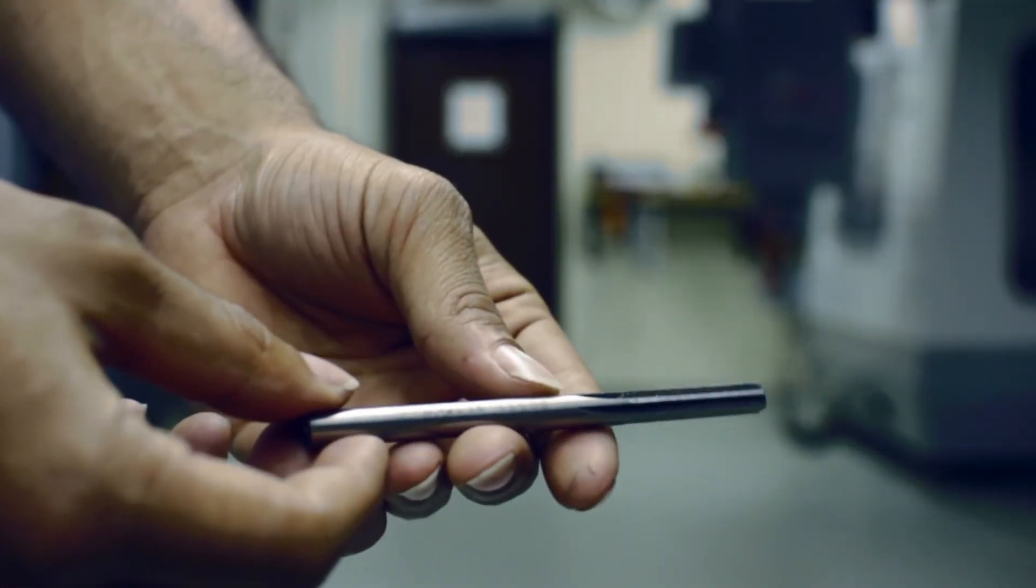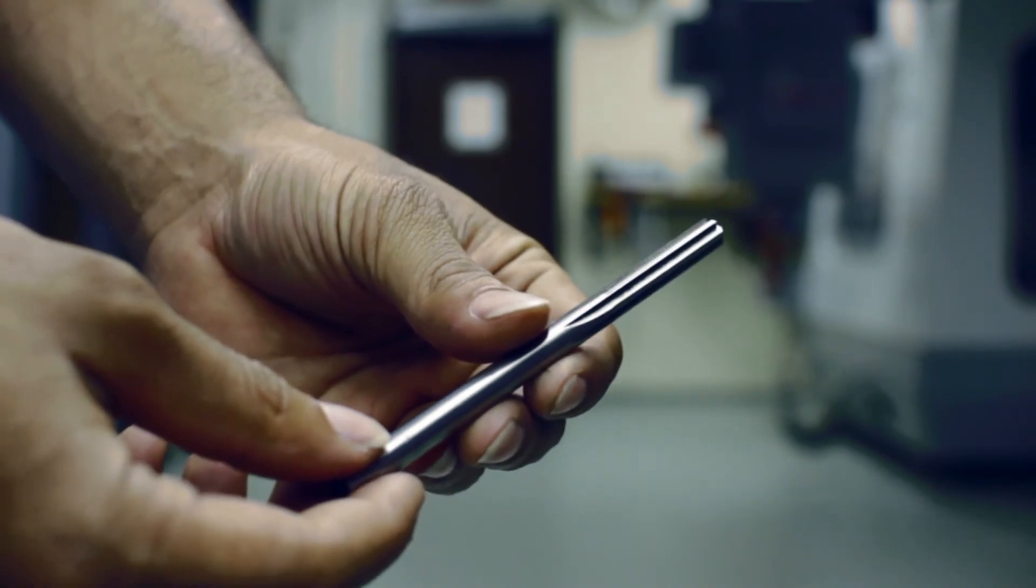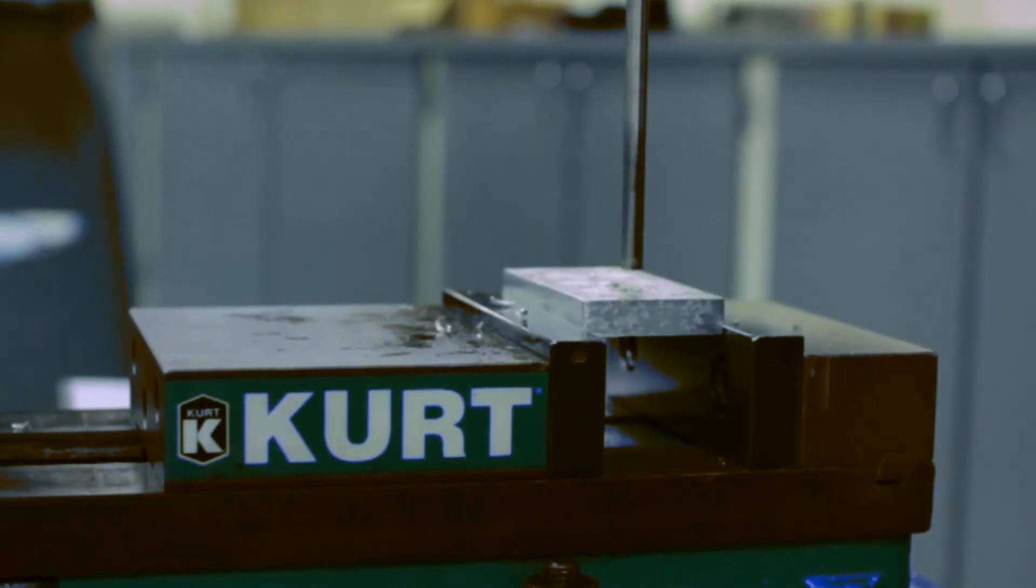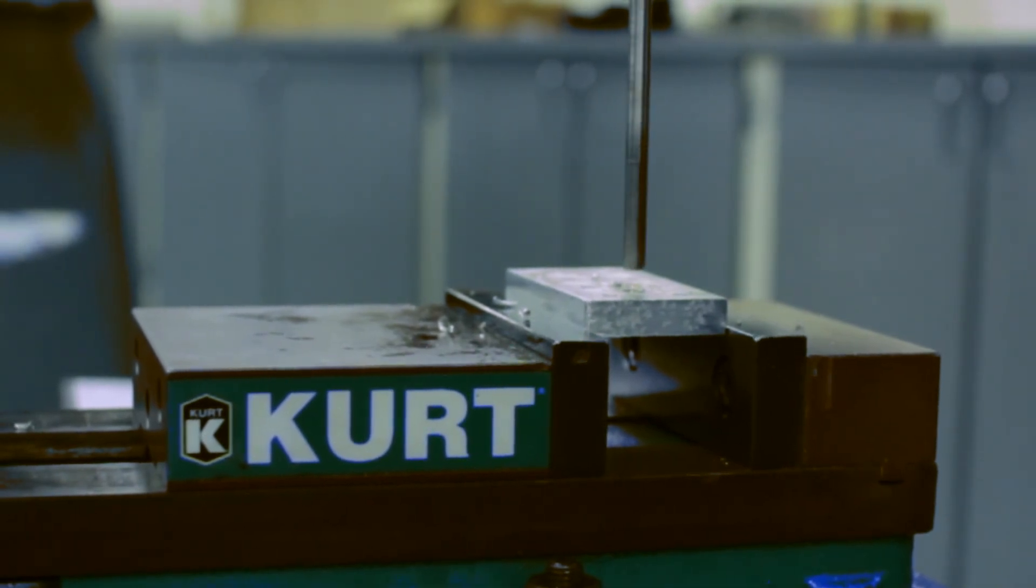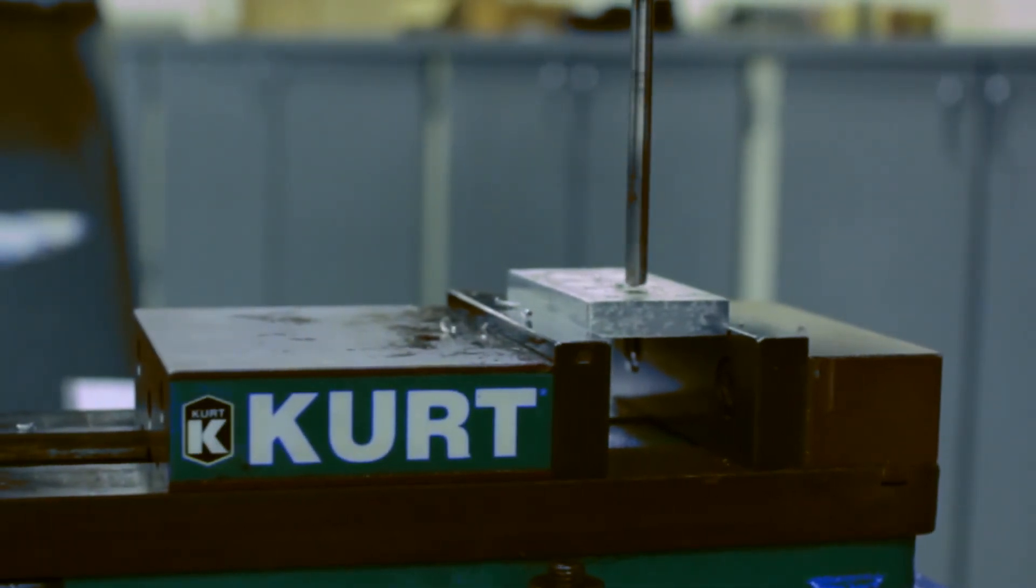Now we are going to use a reamer to produce our tight tolerance feature. When using the reamer, turn on the machine and spin it at 500 RPM. Be very careful.